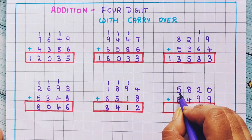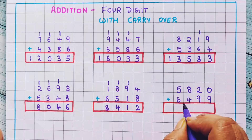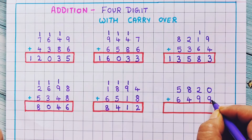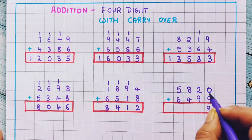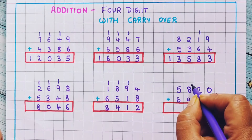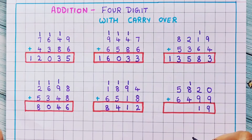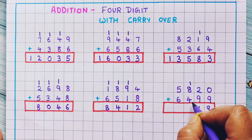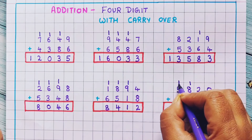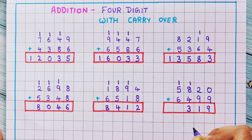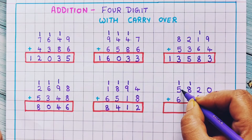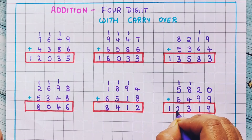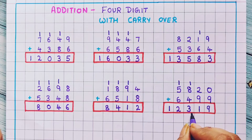Now let's do the last problem. 5820 plus 6499. Now here 0 plus 9 is 9. Then 2 plus 9 is 11, so let's write 1 over here and 1 over here. 1 plus 8 is 9, and 9 plus 4 is 13, so 1 I will write over here and 3 I will write here. 1 plus 5 is 6, and 6 plus 6 is 12. So the answer is 12,319.